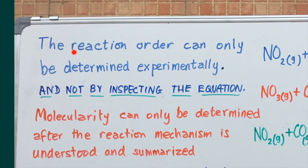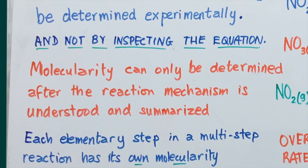What we must note, therefore, is that reaction order can only be determined experimentally. While you might think the balanced equation could tell you the reaction order, and there are cases where it works out that way, there are many cases where you have multi-step reactions. You do not determine the order of reaction by inspecting the balanced equation — you can only determine it using experimental data. Molecularity, on the other hand, can only be determined after the reaction mechanism has been fully understood and summarized. For reactions that have many steps, each step would have its own unique molecularity.